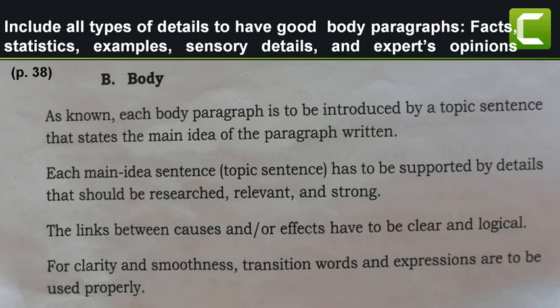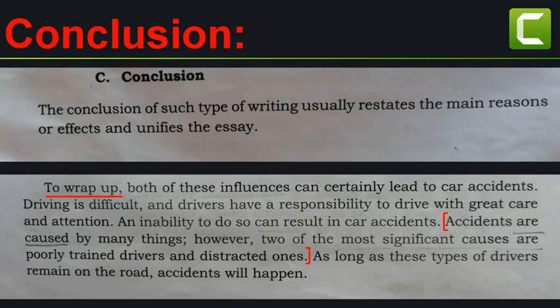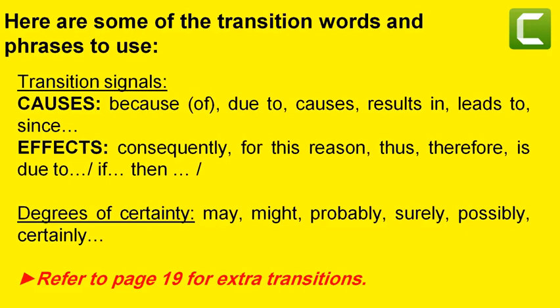Stop the video and refer to page 38 to read the guidelines for writing body paragraphs. Finally, the last paragraph is the conclusion, which seals the essay and summarizes the writer's main idea. It restates the main reasons or effects and unifies the essay. Start your conclusion with a transition word — for example, the model uses 'to wrap up.' You can also use: to conclude, to sum up, in conclusion, etc. Use proper transition words and expressions for clarity and smoothness. Refer to page 19 for extra transitions.